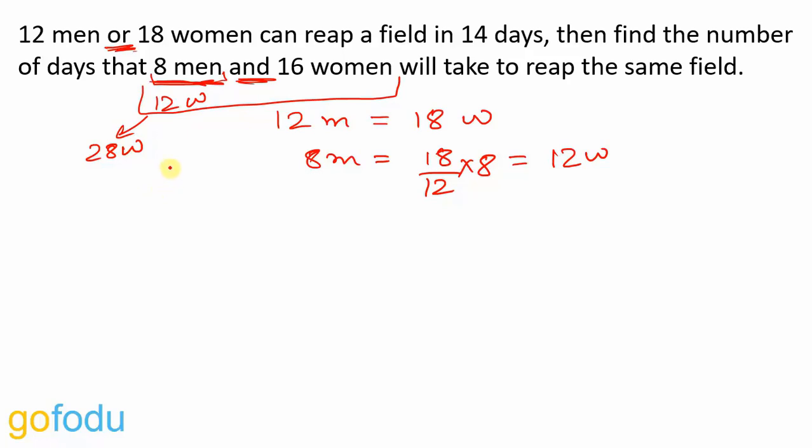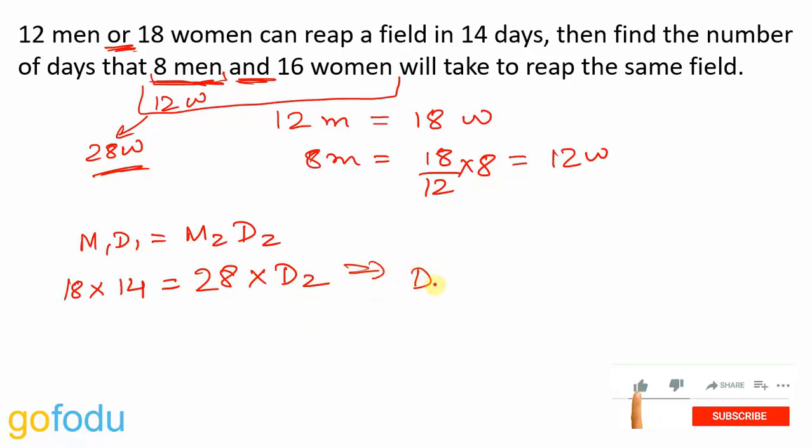So now this question has become 18 women can do a work in 14 days, 28 women will do the same work in how many days. And we have our good old M1D1 is equal to M2D2. 18 women can do a work in 14 days, 28 women, that is 9 days.